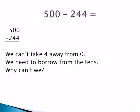Subtracting across zeros. Our problem is 500 minus 244. The first thing we do is look at the ones, but we can't take 4 away from zero. We need to borrow from the tens.